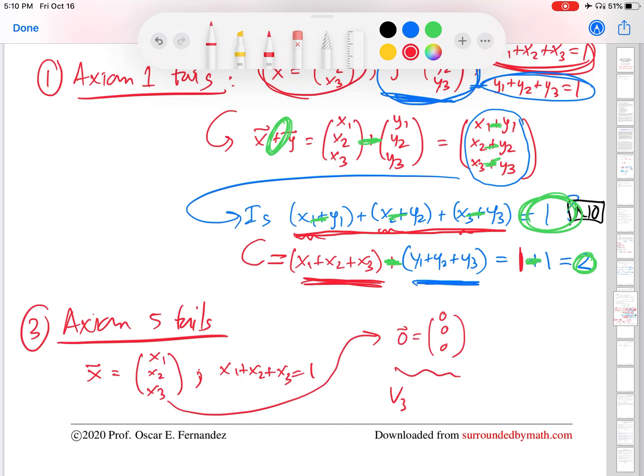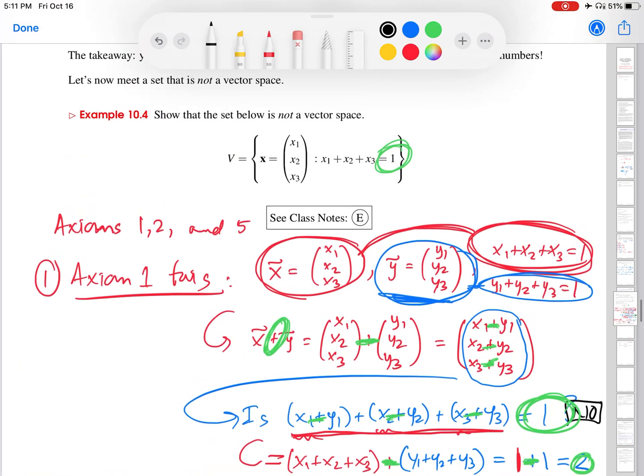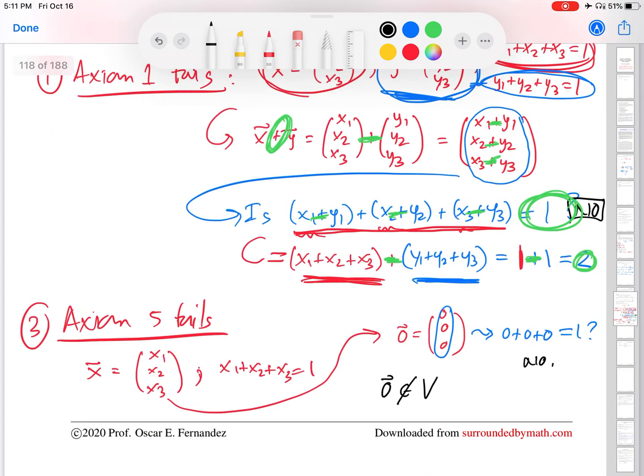The only reasonable candidate for a zero element for this space is the vector whose components are all zero. This is the zero element for V3, the set of vectors with three components, which is almost what this space in this example is, except we have now added this condition on the sum of the components. So if I take this as my zero vector, then what's going to happen? If I try to see if this vector is in the space, I would add its components. And do I get one? No, I do not. So the vector zero is not in this space V.